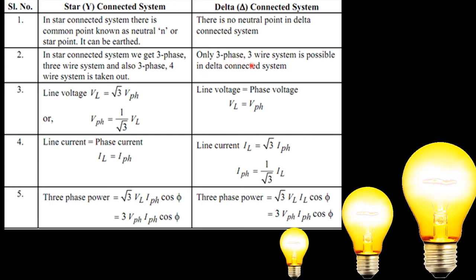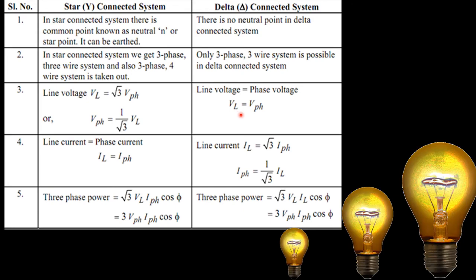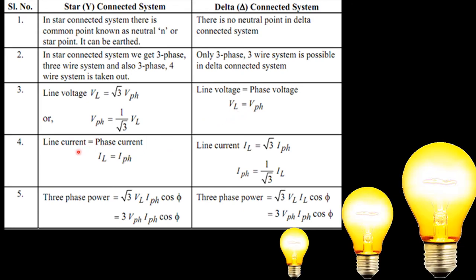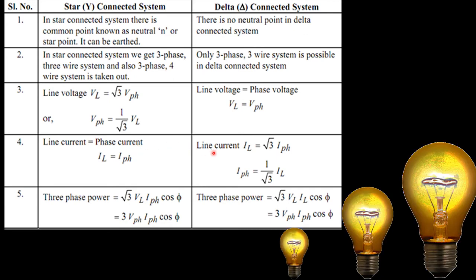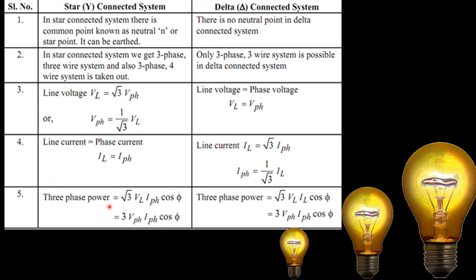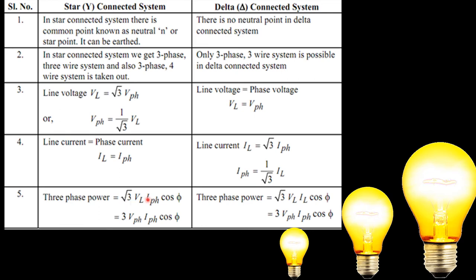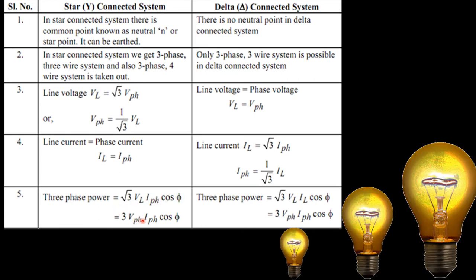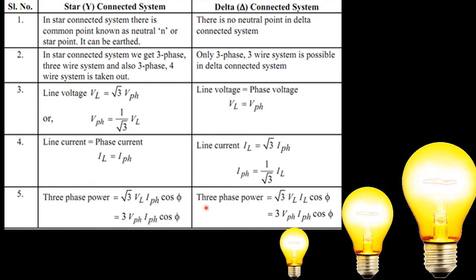In the star connection, the line voltage is equal to root 3 times the phase voltage, and the phase voltage is equal to 1 by root 3 times the line voltage. In the delta connection, the line voltage is equal to the phase voltage, and the line current is equal to root 3 times the phase current. The power equation is 3 times V-phase times I-phase times cos(phi).